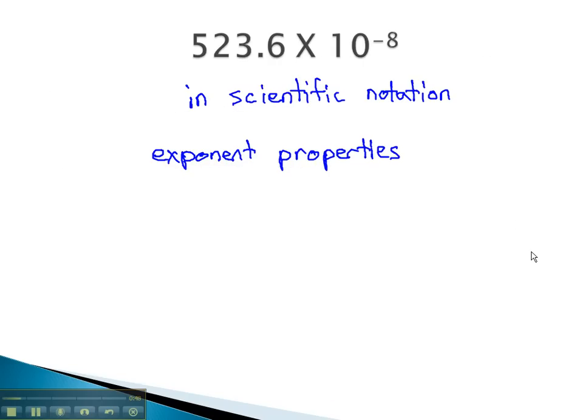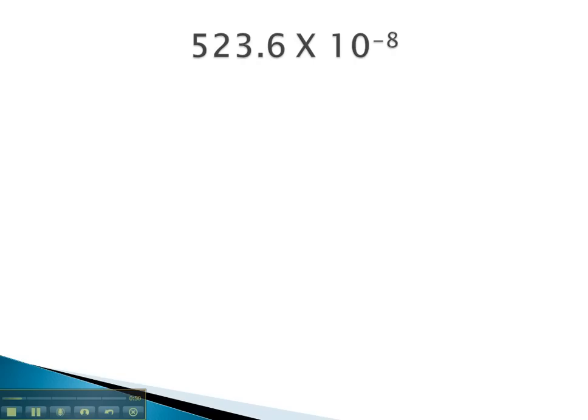For example, if I have this expression, notice the decimal is in the wrong place. The decimal should be after the 5. Focusing just on the number, that number should be 5.236 times 10.